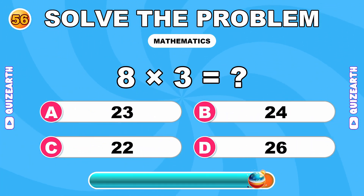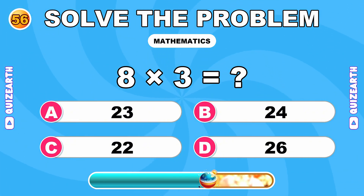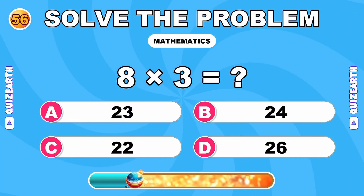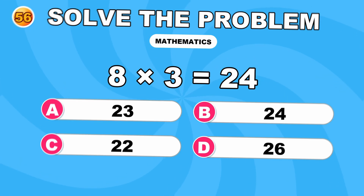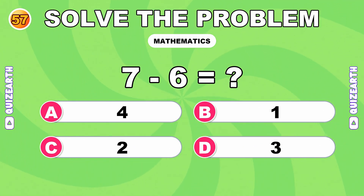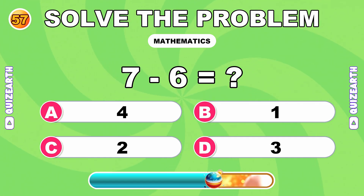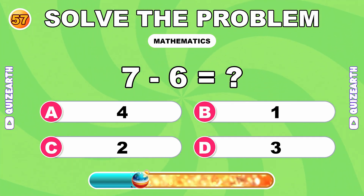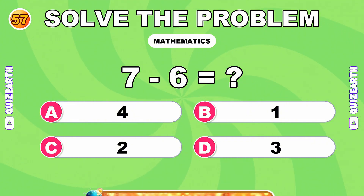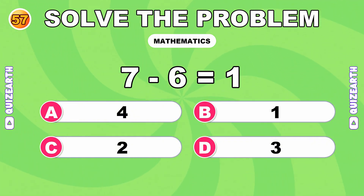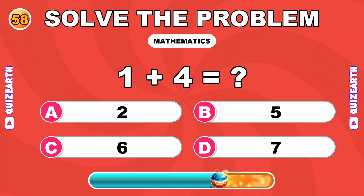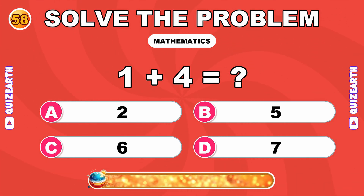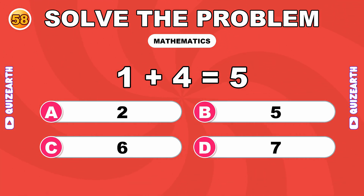How much is 8 times 3? Incredible stamina. The answer is 24. What do you get when you subtract 6 from 7? Never slowing. The answer is 1. What is 1 plus 4? Almost there. The answer is 5.